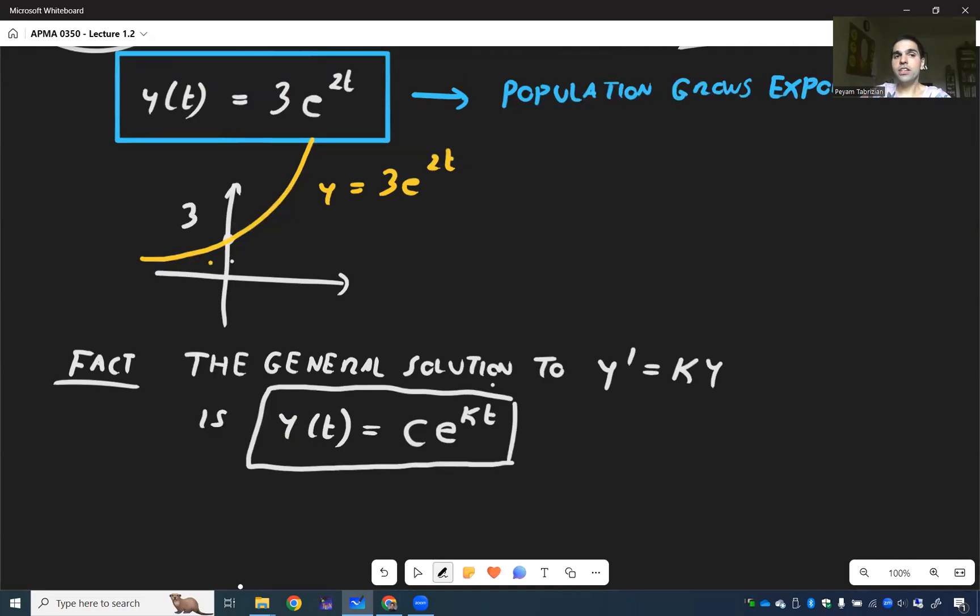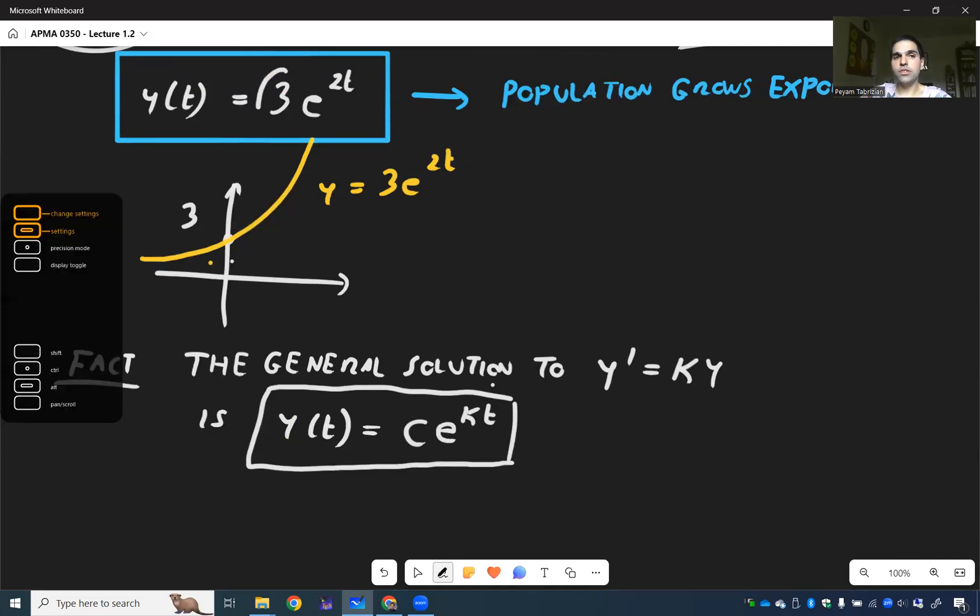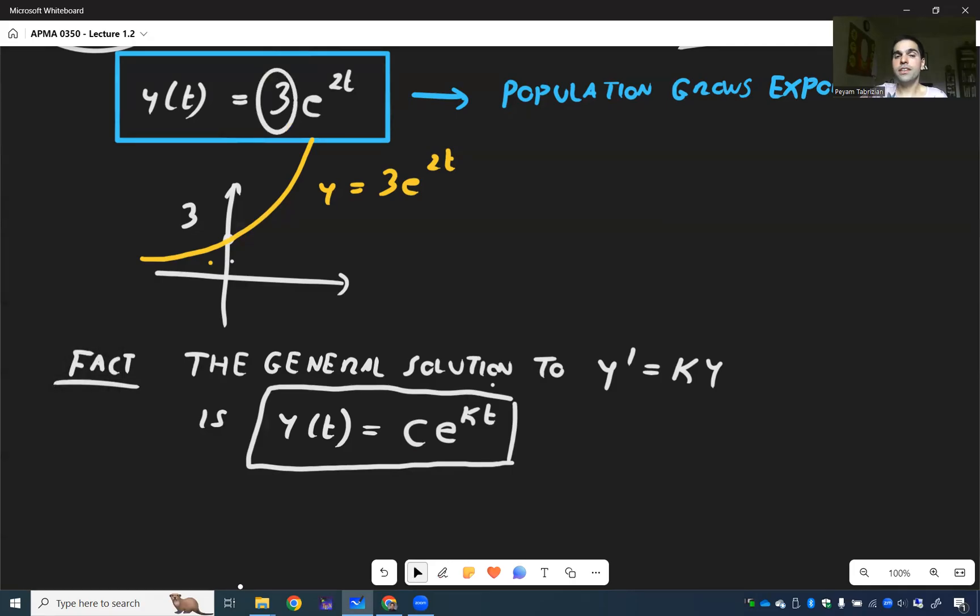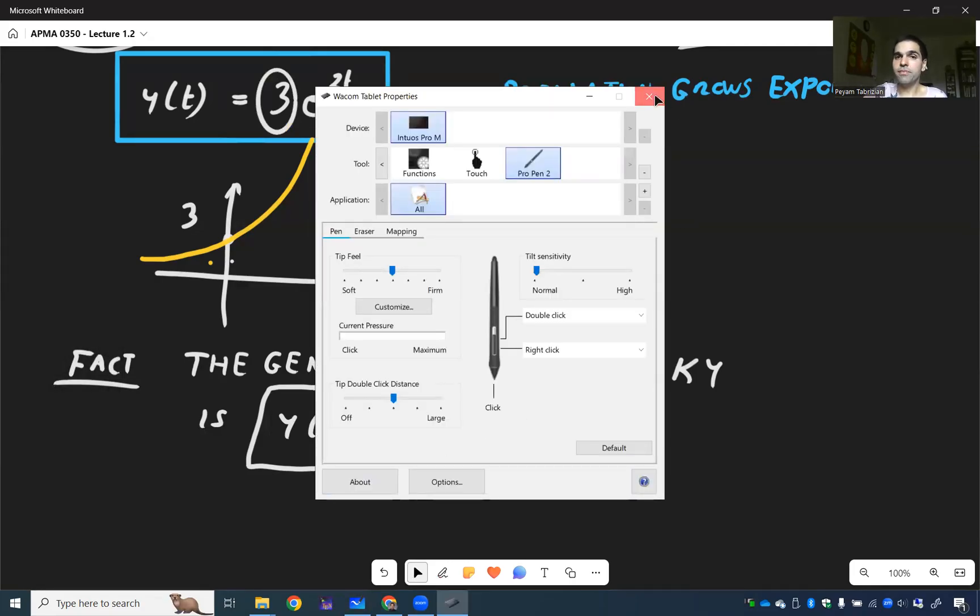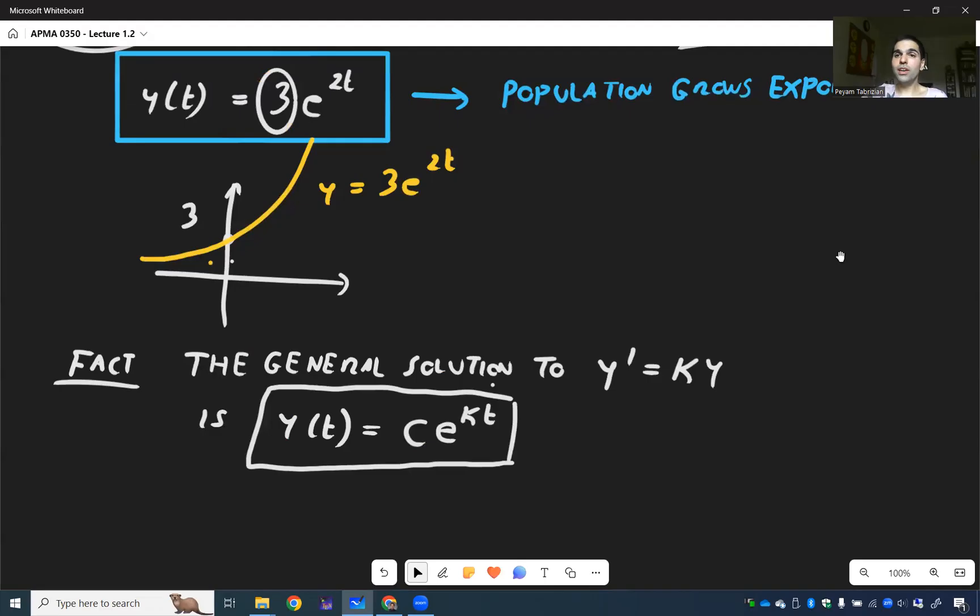And, not only that, notice, in this y of t equals 3e to the 2t, this 3 was the initial condition. This is not a coincidence. This will always be true for this differential equation.